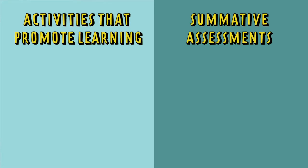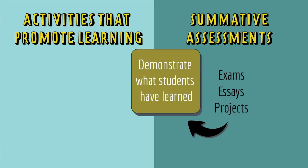First of all, let's clarify one thing. There are two types of activities that students do in a class: activities that promote learning, and summative assessments. Summative assessments are things like exams, essays, or projects — activities that students do to demonstrate what they have learned. While it's possible that students might learn during a summative assessment, the purpose of a summative assessment is for the teacher to look inside the mind of the student and see what they have learned.